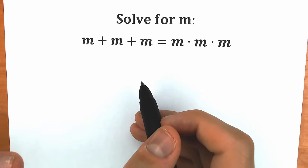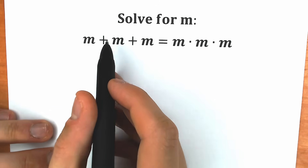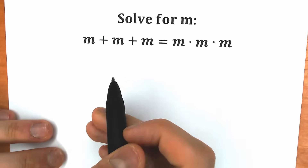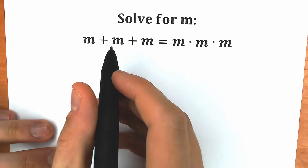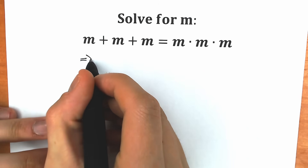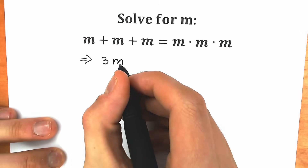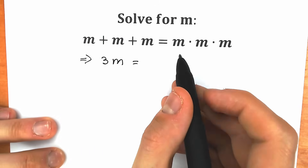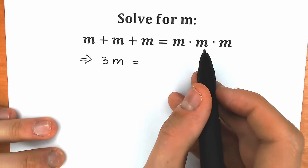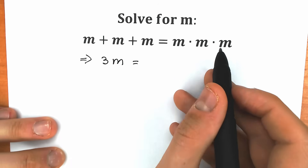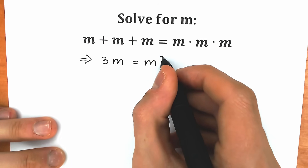Let's try to solve it completely and algebraically. On the left side, m plus m plus m is 3m — we're adding three same elements. On the right side, m times m equals m squared, and m squared times m equals m cubed.